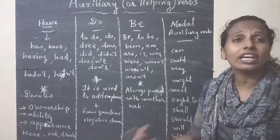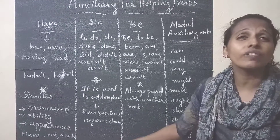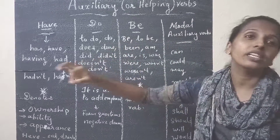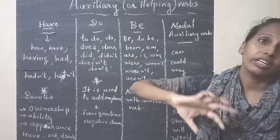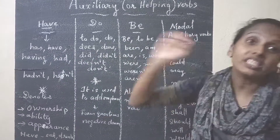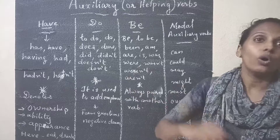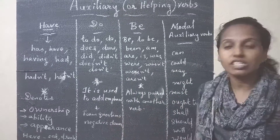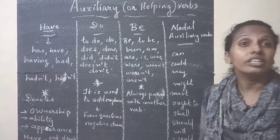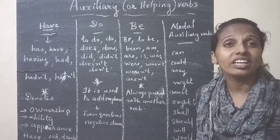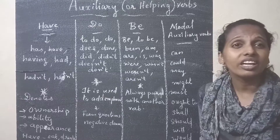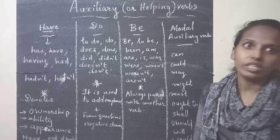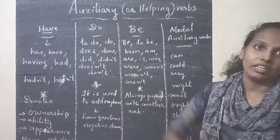For forming questions and negatives, we write do, does, or did. For example: 'She doesn't know.' If you want to form a question — 'Does she?' or 'Did she?' — we need to use these auxiliary words.